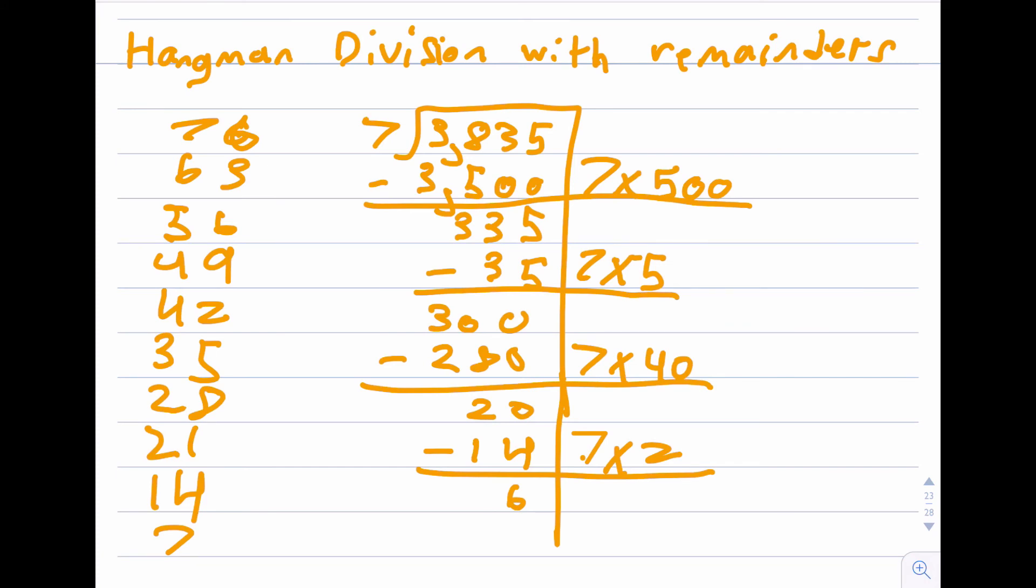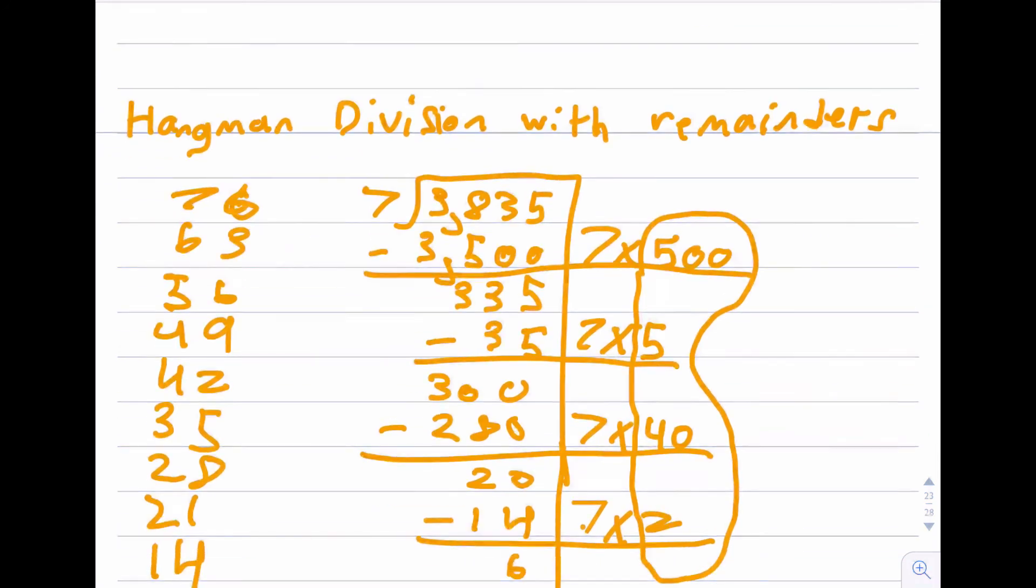Now let's see how many 7s get into 3,835. Well, we did 7 times 500, 7 times 5, 7 times 40, and 7 times 2. All of those numbers except the 7s equal 547. Do you agree? So 3,835 divided by 7 equals 547 with a remainder of 6.